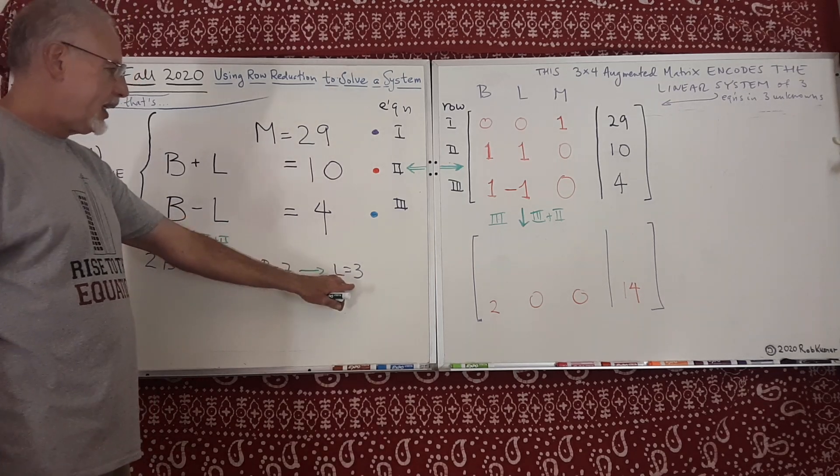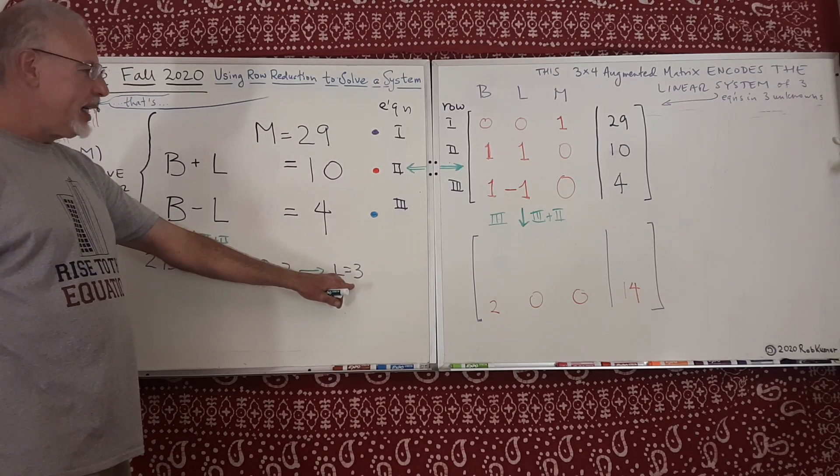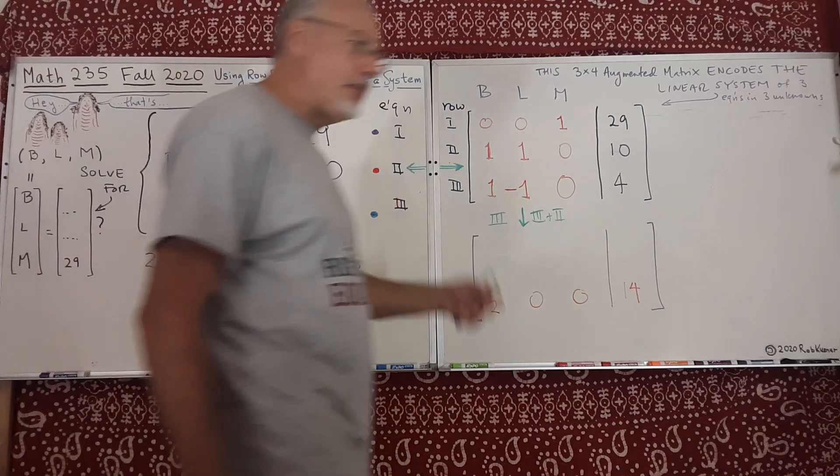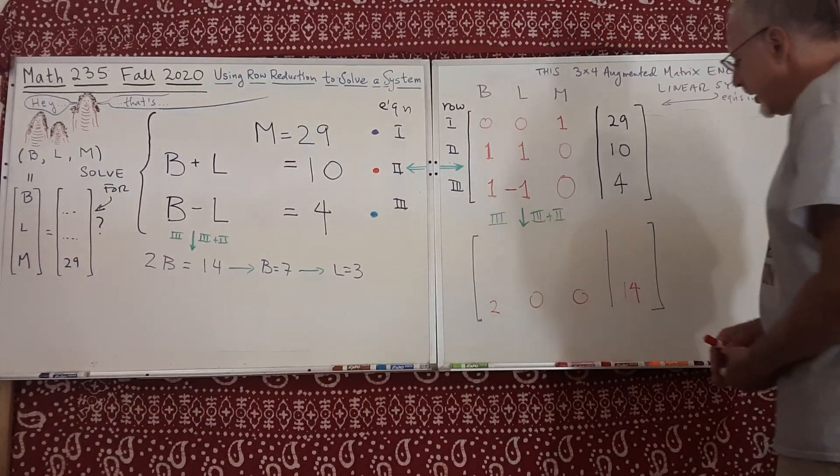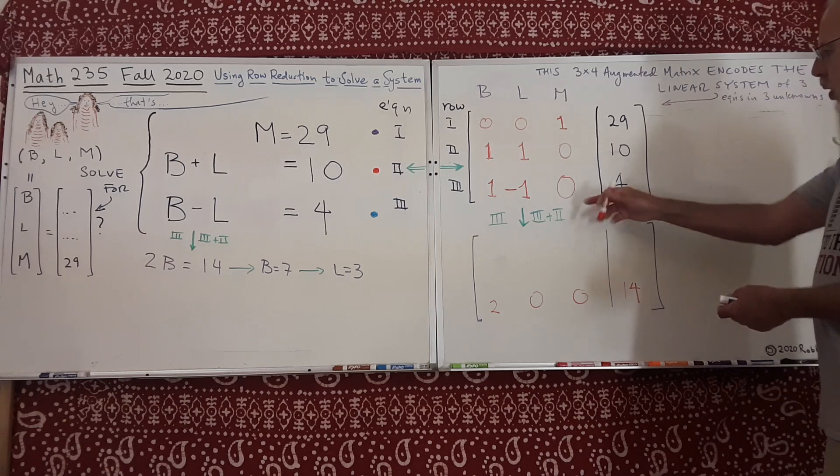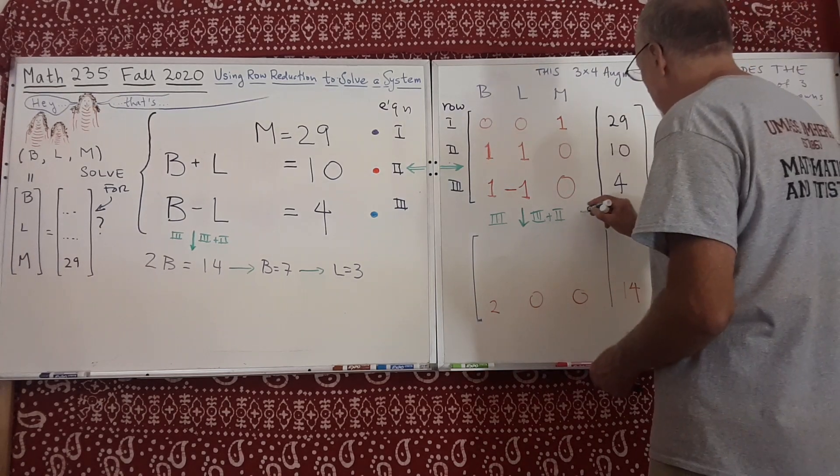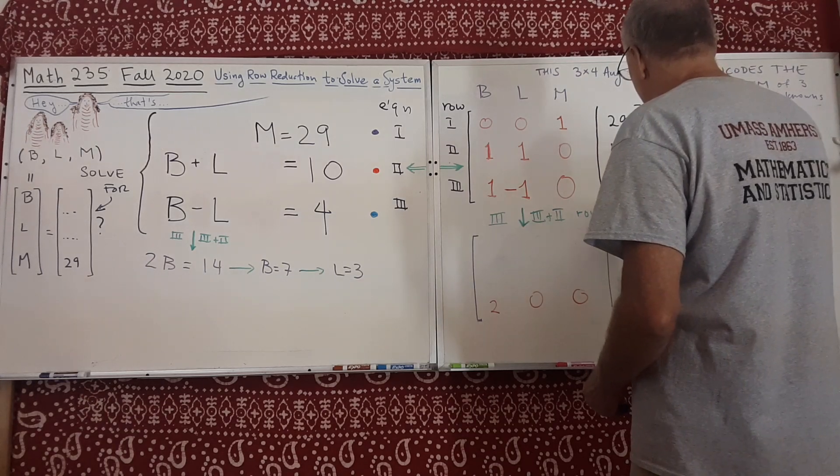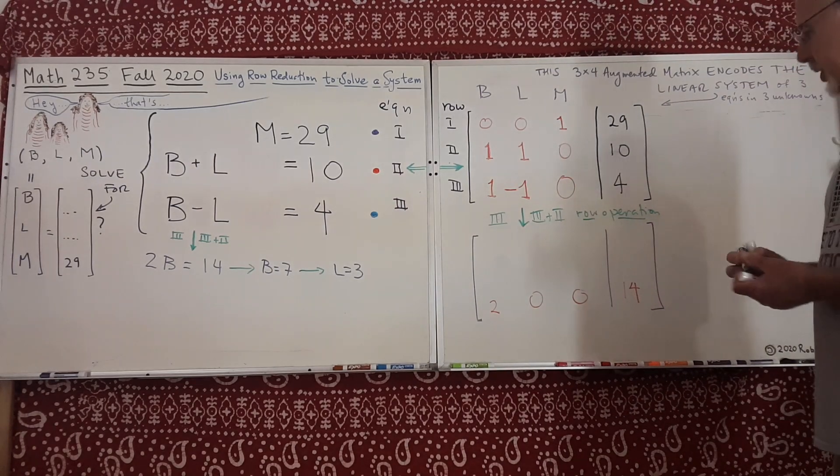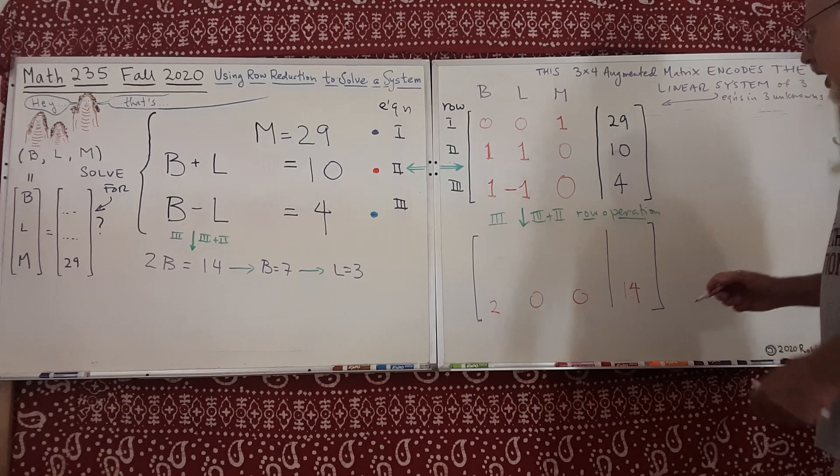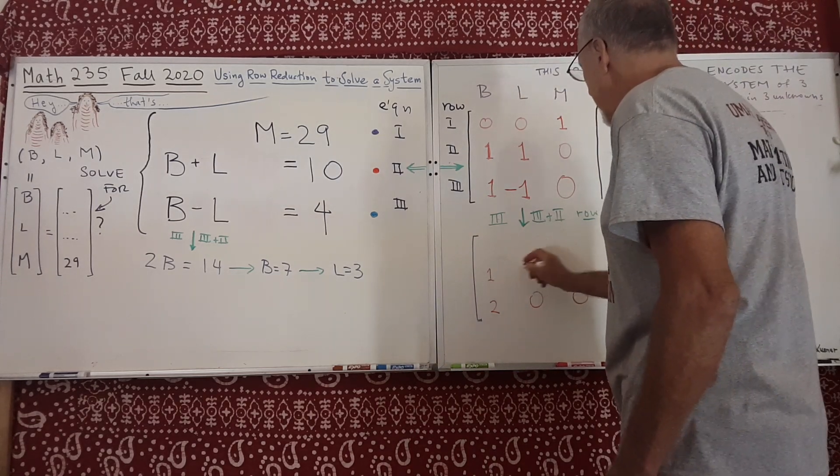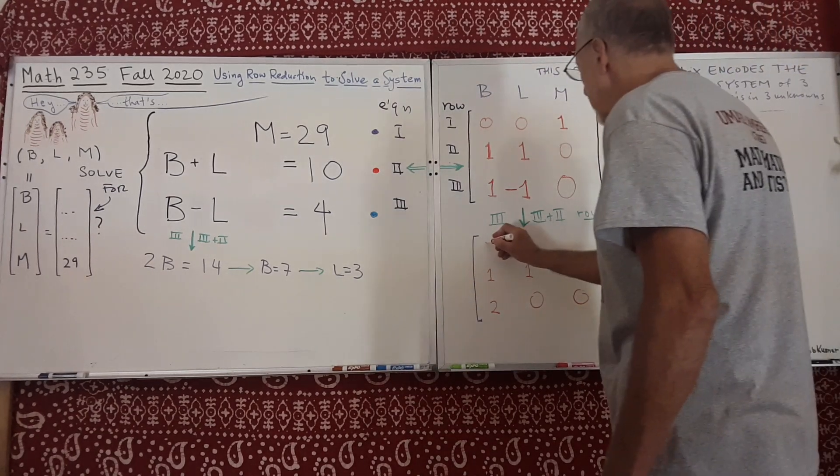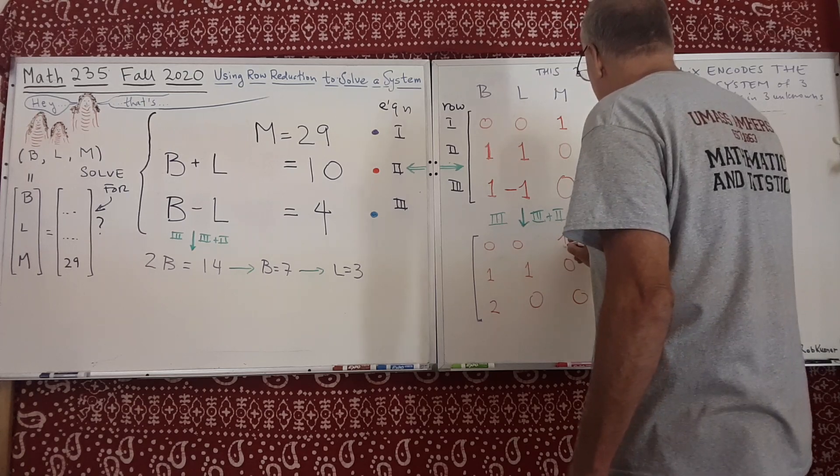And then we concluded that L was 3, and that came from somehow working with back-substituting it to this equation. Let's try to do something similar, but using only these row operations. This is a row operation. And this process is known as row reduction. I'll copy what we had before, so we'll do one step at a time to make things easy. What we had before, we didn't do anything to row 2. That was still 10. And row 1 was still 0, 0, 1, and 29.